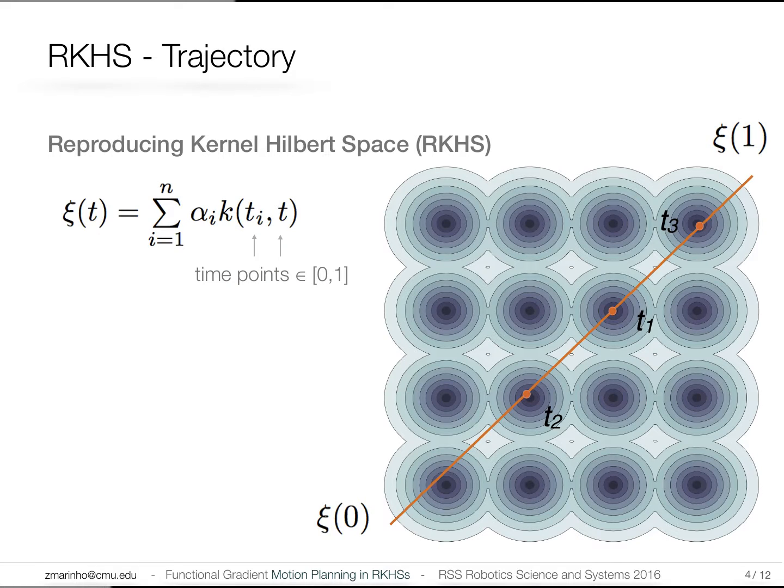A trajectory in an RKHS is simply a sum of weighted kernel functions centered around different time points. Consider this example where we have circular obstacles, and these lines correspond to the iso-contours of the obstacle cost, and we get high cost for dark regions and low cost for lighter regions.